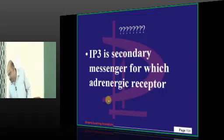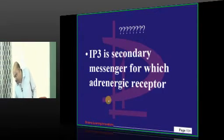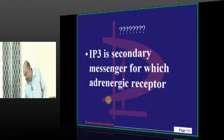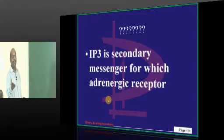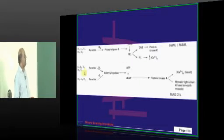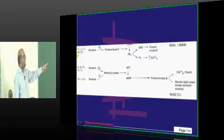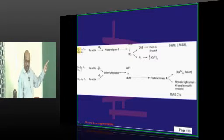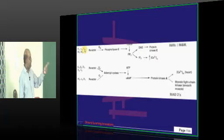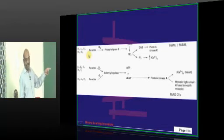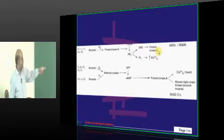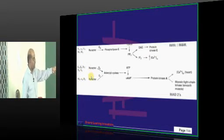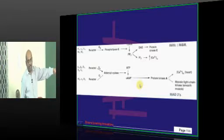The correct answer: H1 (histamine-1), alpha-1, V1, M1, M3 — for all of them, IP3 and increased calcium is the secondary messenger. For beta-1, beta-2, H2, V2, D1 — for all of them, it is cyclic AMP as the secondary messenger.